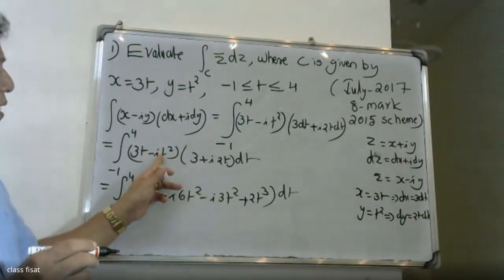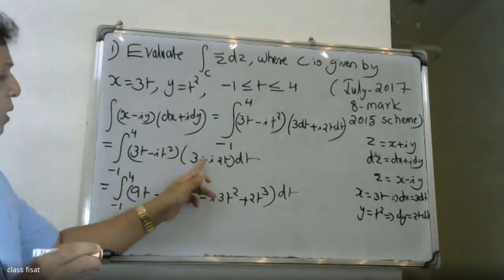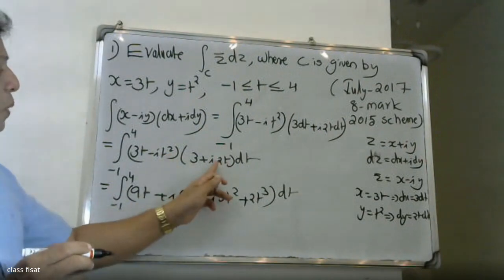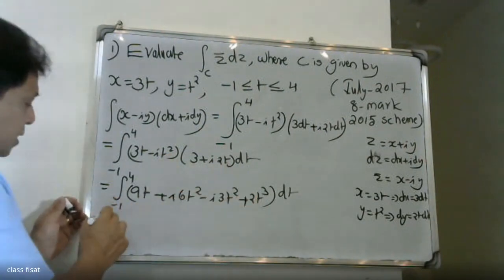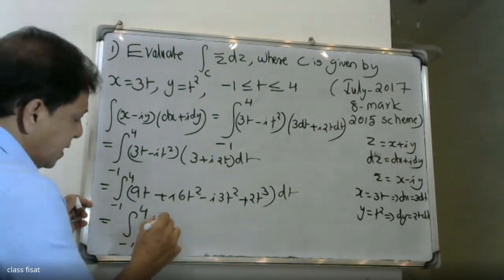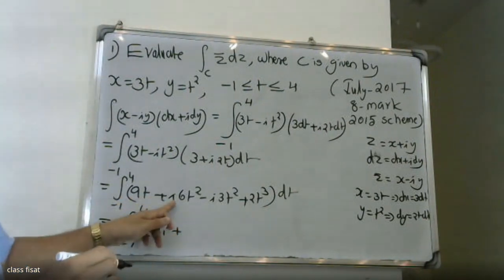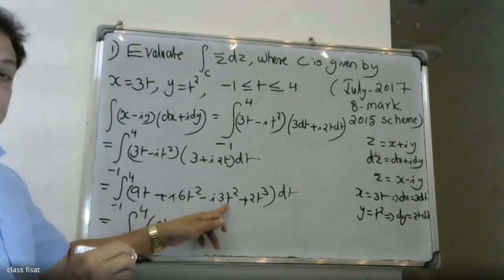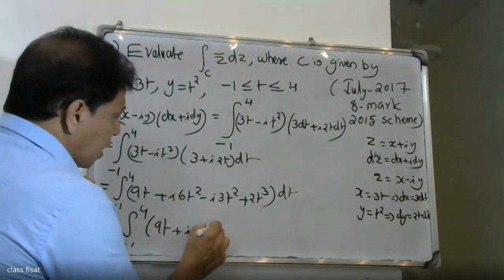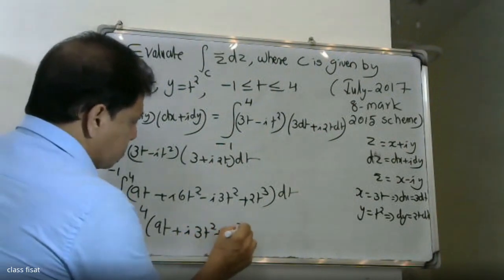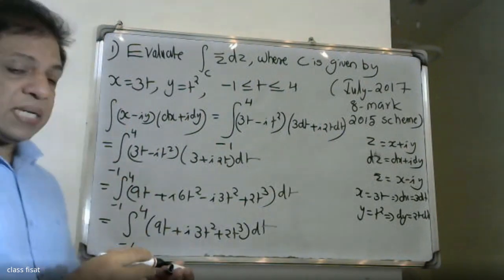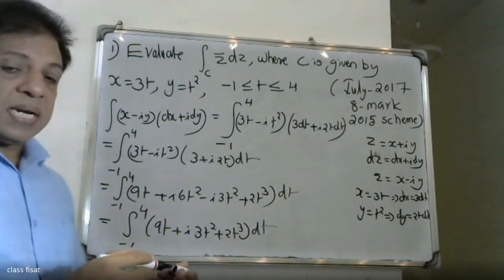Since i squared equals minus 1, the minus i squared term becomes plus 1. So the integrand simplifies. We integrate from minus 1 to 4: the expression becomes 9t plus i·6t squared minus i·3t squared, simplified further.